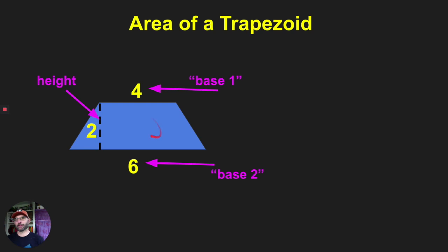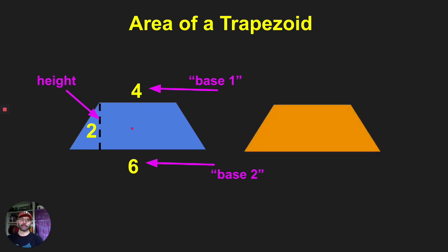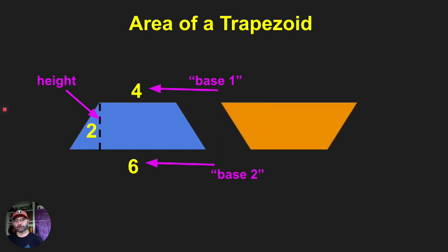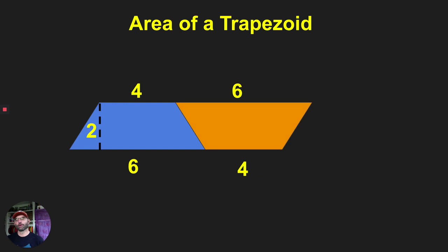Now check it out. If I take this trapezoid and copy it — here's another exact copy, same size — we put them side by side. Then I flip one over, and look: they fit together. When they fit together, what shape do we get? It's a parallelogram!